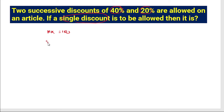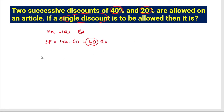With a mark price of 100 rupees, after a 40 percent discount the selling price is 100 minus 40 equals 60 rupees. For the next step, we apply a 20 percent discount on 60 rupees, meaning we sell at 80 percent of 60. So selling price equals 80 percent of 60 rupees.